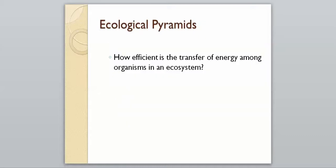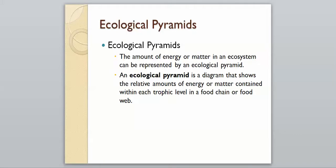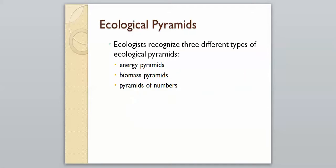We can show these different trophic levels in what are known as ecological pyramids, which show how energy is transferred among organisms in an ecosystem. An ecological pyramid is a diagram that shows the relative amounts of energy or matter contained within each trophic level in a food chain or food web. There are three different types of these pyramids: energy pyramids, biomass pyramids, and a pyramid of numbers.